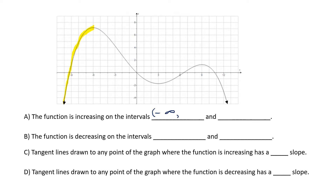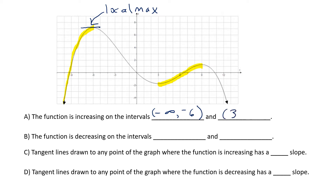That interval is from negative infinity, and the graph reaches a high point at negative 6. Notice that at this high point, you have a horizontal tangent line — it's a turning point. If a point behaves such that the only direction it can go either forwards or backwards is down, then we've reached a local max. The graph also rises again from 3 to 9, so the function is increasing on the interval 3 to 9. Again, notice that when you get to the high point, you get a horizontal tangent line, and that means the point goes down in either direction — that's a local max.